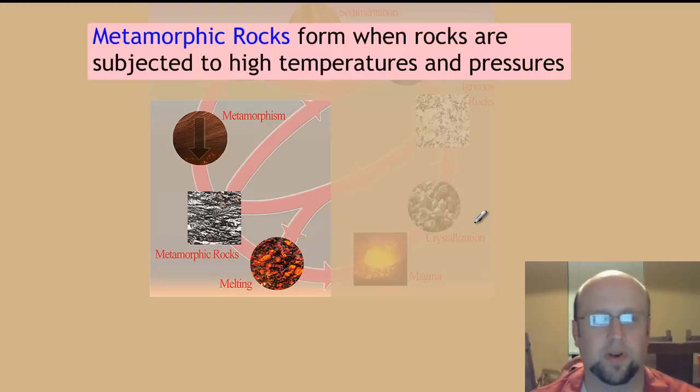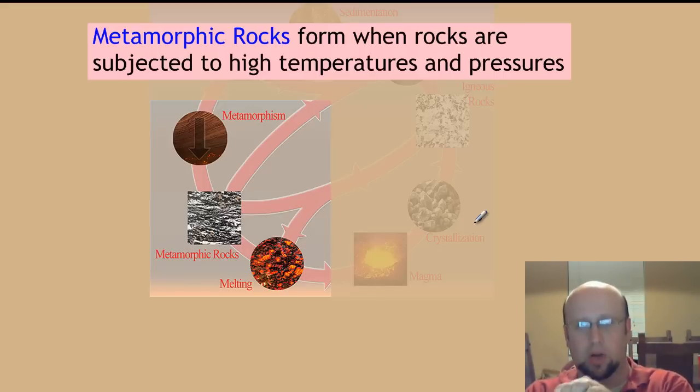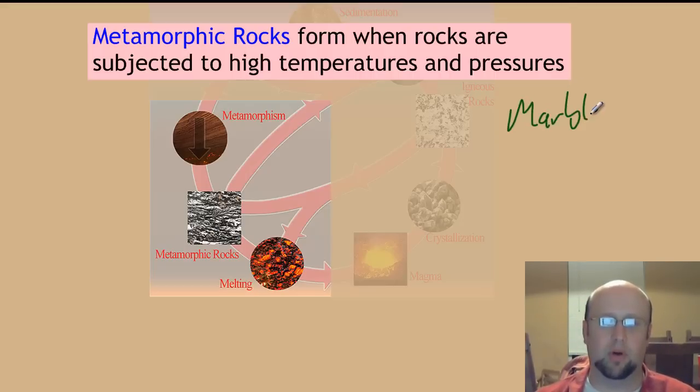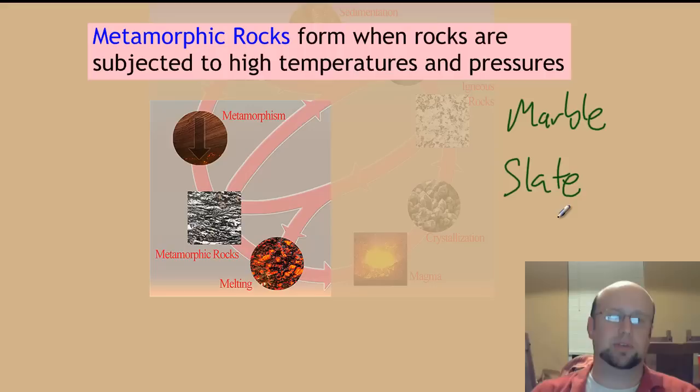Our third type are metamorphic rocks. As it sounds, they undergo some metamorphosis through really high heat and really high pressures together. They take what was formerly a different kind of rock—igneous, sedimentary, or even another metamorphic rock—and under this really intense heat and pressure, basically press everything down, fuse it, change its chemical composition and physical composition. Marble is a really good example of a metamorphic rock. Another good example would be slate and shale deposits.